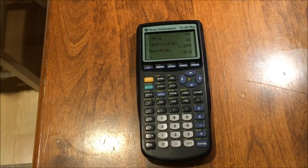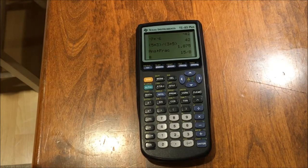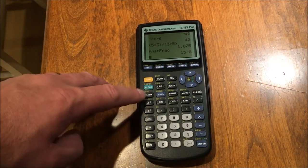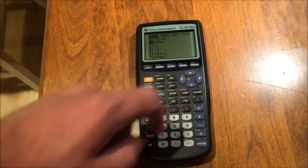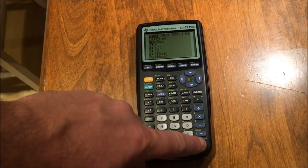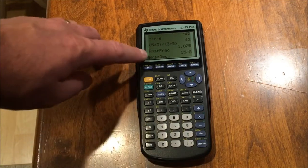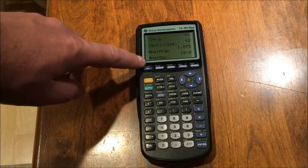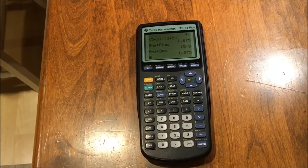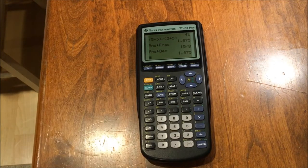And you can go back and forth between fraction and decimal. So if I press math again, and this time I press either the number 2 or move the cursor down and highlight number 2, it's going to turn my previous answer, which is now 15 over 8, from a fraction into a decimal once I press enter. And it's back to a decimal.